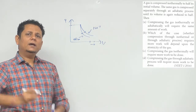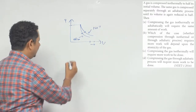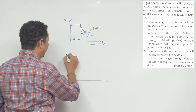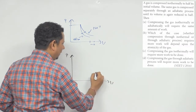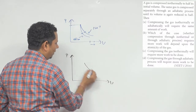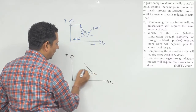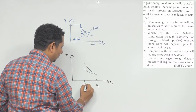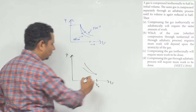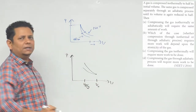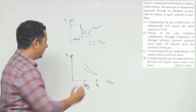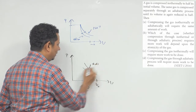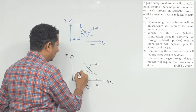एक ही volume से चालू होके आपका volume कम हो रहा है. तो इस case में जो PV graph बनेगा: यह P है, यह V है — एक volume V0 से चालू हुए और V0/2 पे पहुंचे. इस graph में यह वाला process adiabatic है और यह वाला isothermal है.